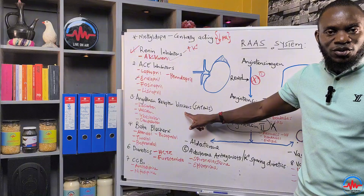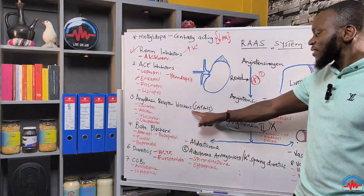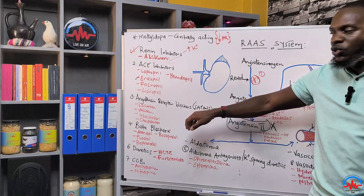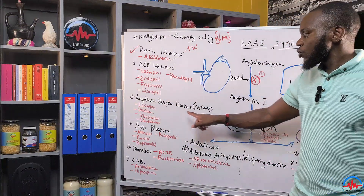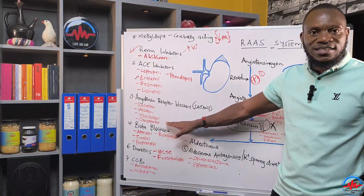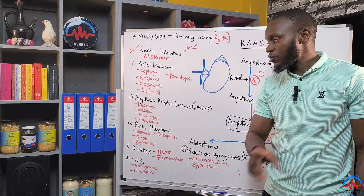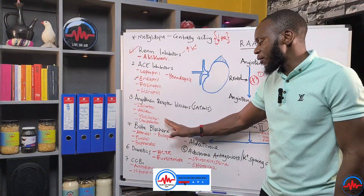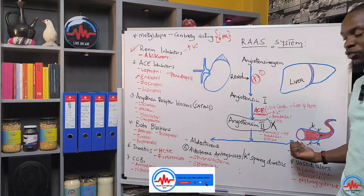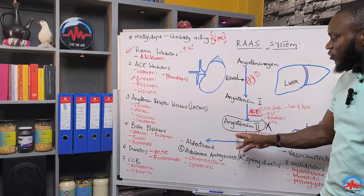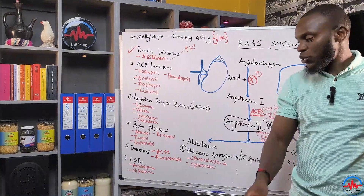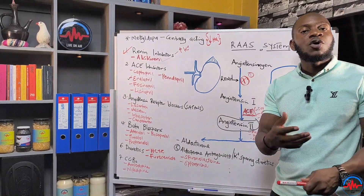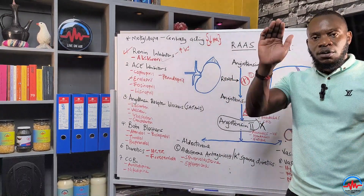These angiotensin receptor blockers are famously known as sartans — they end with the word '-sartan'. For example, losartan — most of you are on a combination called losartan H. We also have valsartan, irbesartan, and candesartan; all have different brand names but these are the generic names. These sartans block angiotensin 2 from binding to blood vessel receptors to cause constriction, and they also block it from binding to the adrenal gland to activate aldosterone production, so you don't get water retention, blood volume falls, and blood pressure falls.